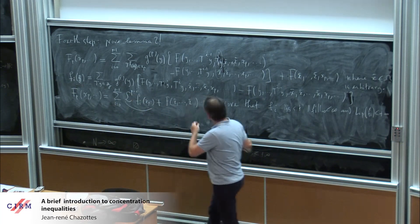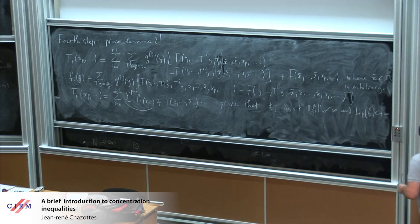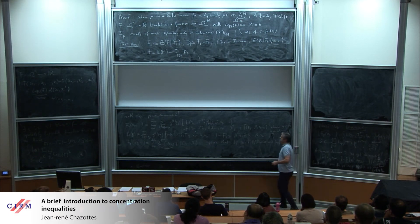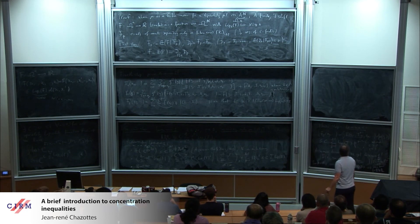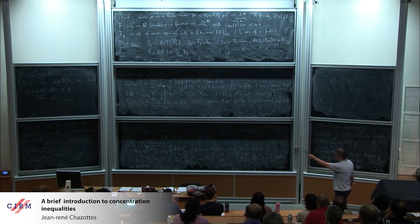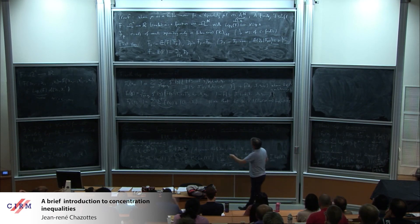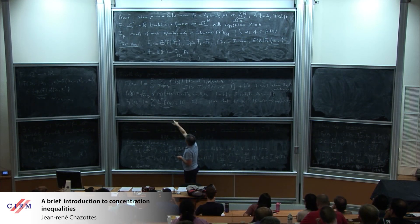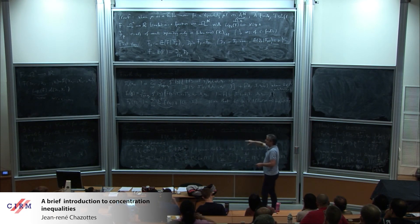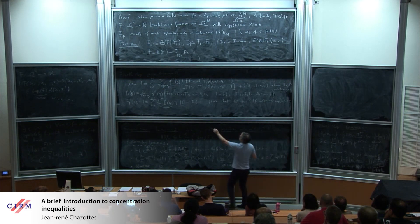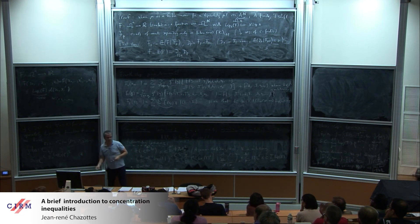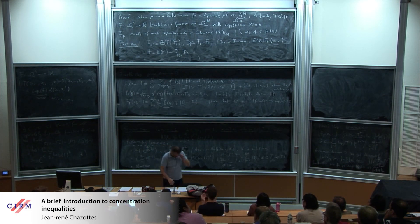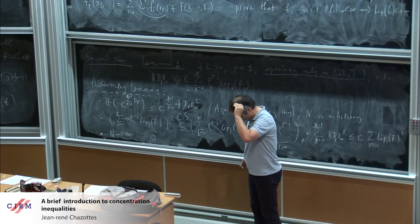When you add up all these inequalities and use the spectral gap, the sum of integrals of phi_i with respect to mu all cancel, and you recover exactly the bound in Lemma 2. That's it. I will stop now. Thank you for your attention.